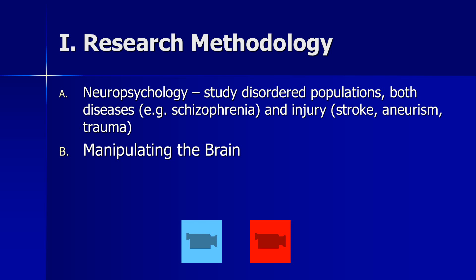Another thing neuroscientists can do is actually manipulate the brain. One way is through pharmacological lesioning — a fancy term for causing the brain to stop working in certain ways through the administration of drugs. In my own research, we've modeled organic amnesia through a drug called midazolam, whose brand name is Versed. A number of you have probably been administered this drug in an outpatient surgery setting — it's used by oral surgeons, dentists, and similar practitioners.